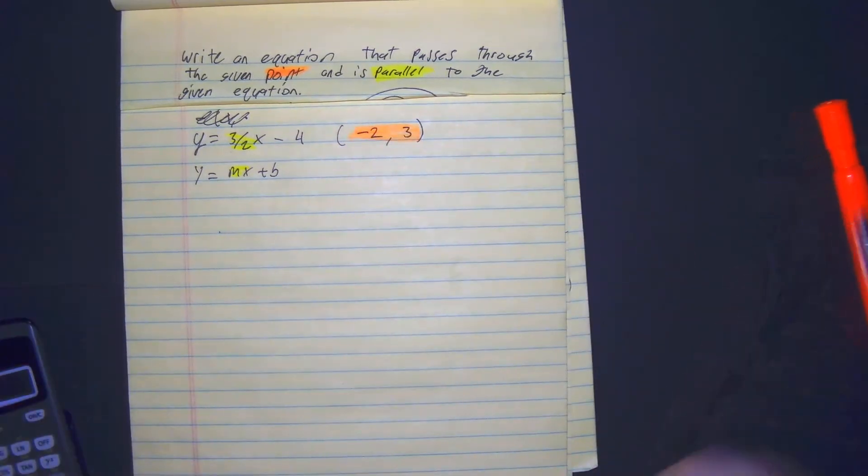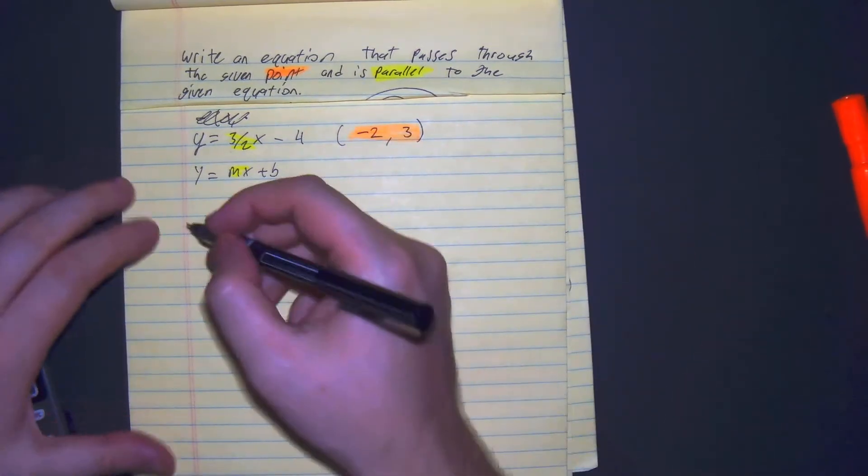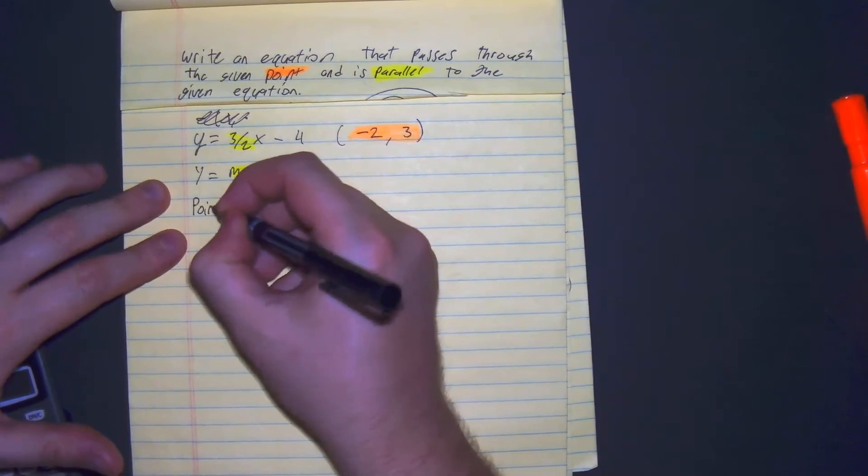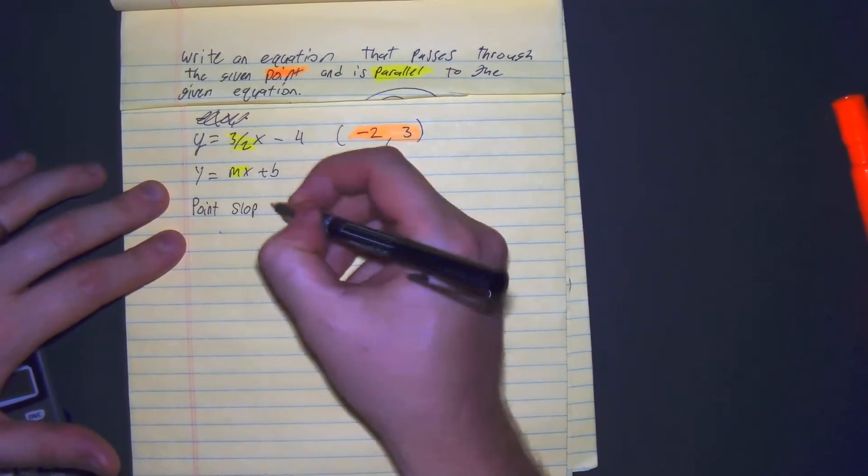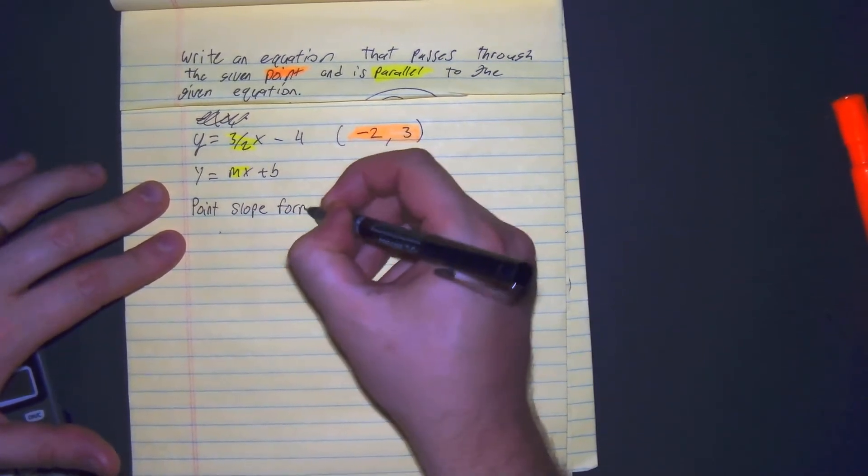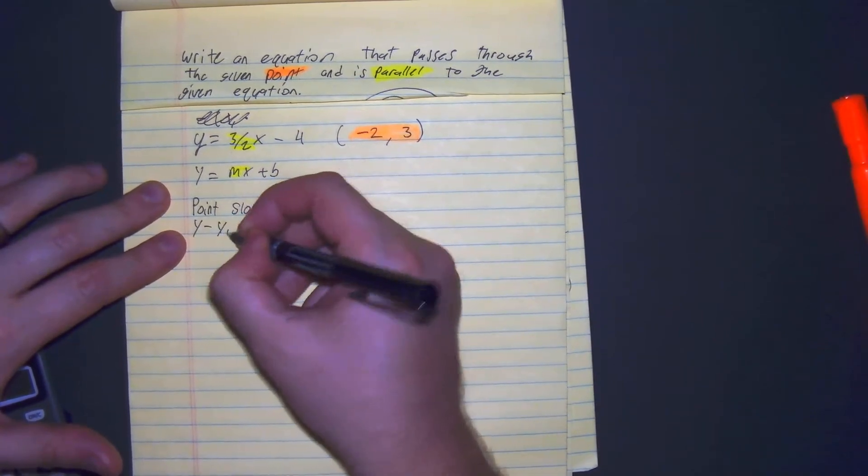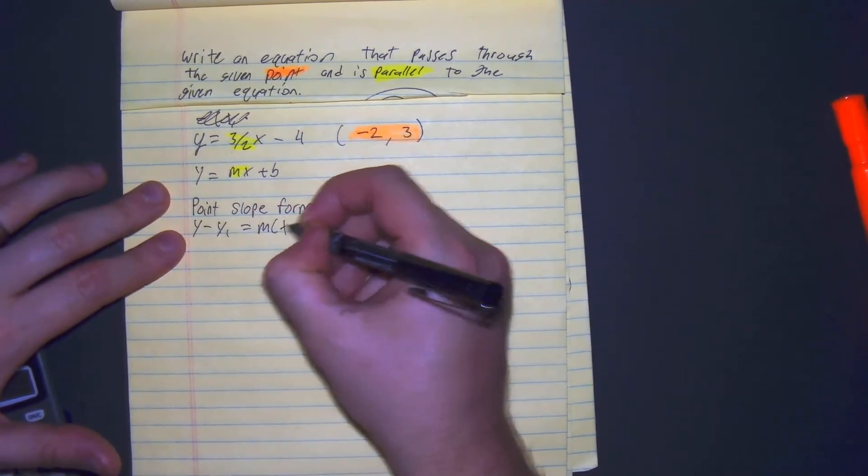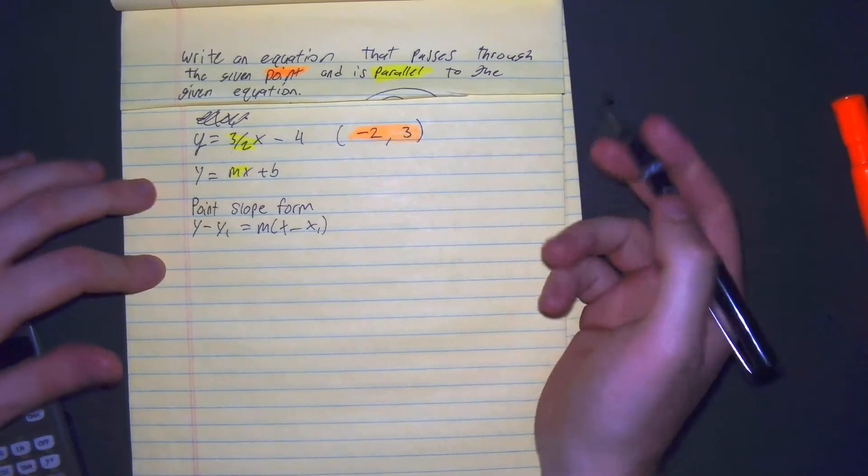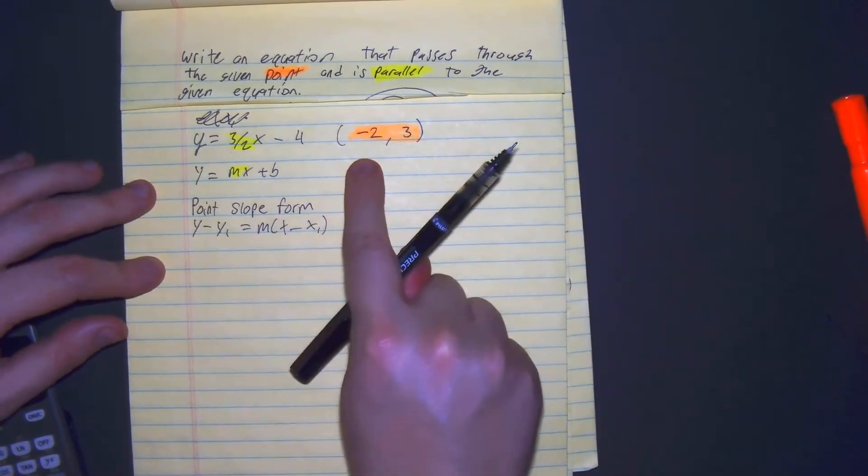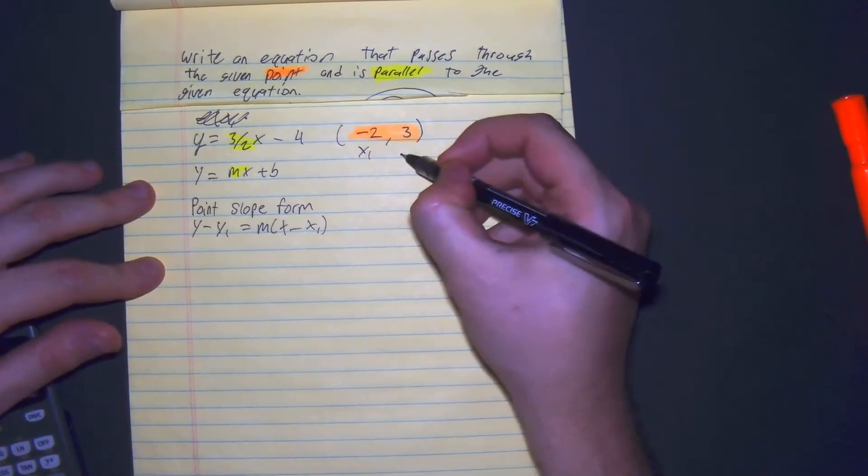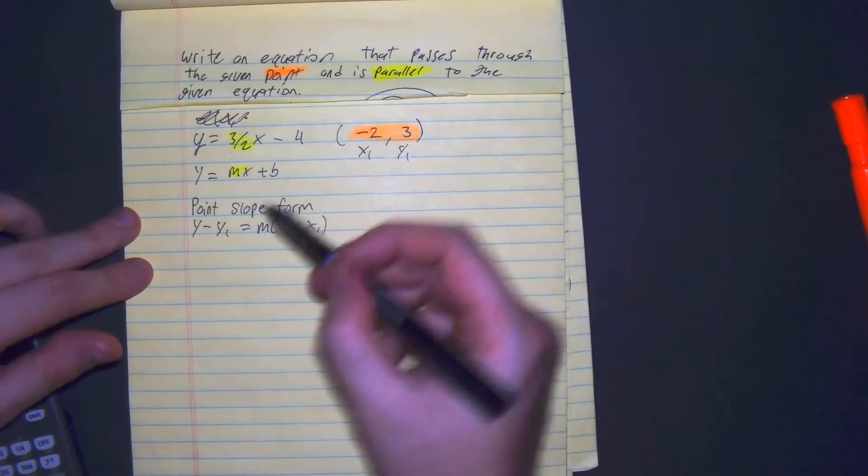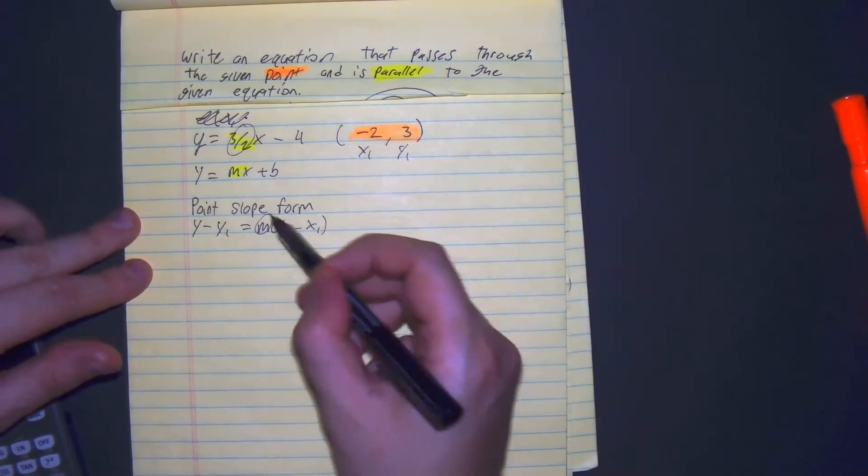Since we have our point and our slope, we can put it into point-slope form, which is y minus y₁ equals m times x minus x₁. To make sure we do this right, I should label my subscripts: x sub 1, y sub 1, and our slope, 3 halves.